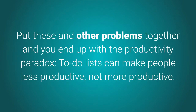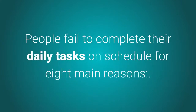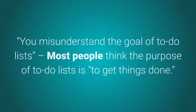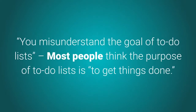To-do lists can make people less productive, not more productive. People fail to complete their daily tasks on schedule for eight main reasons. The first reason: you misunderstand the goal of to-do lists. Most people think the purpose of to-do lists is to get things done — they're wrong.